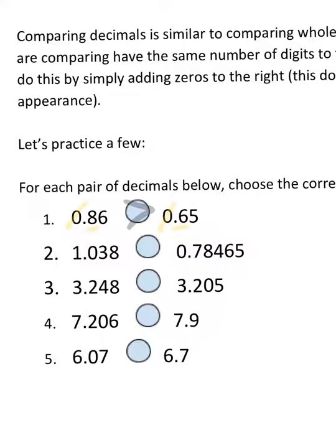I can do the same thing again. Start here and here, I can stop right there because one is greater than zero, so I know that 1.038 is greater than 0.78465.